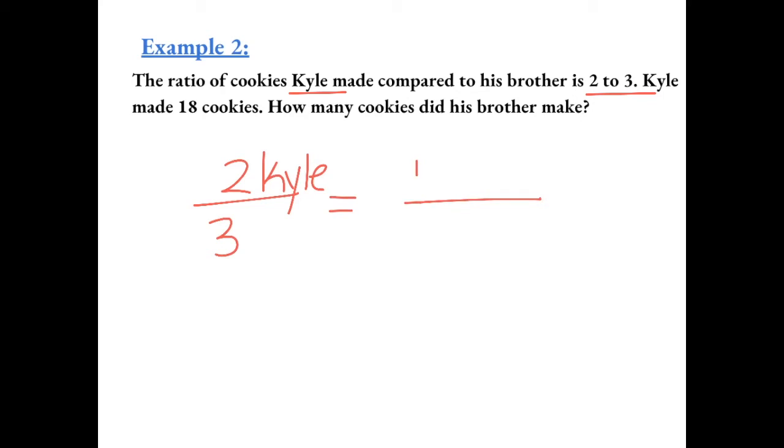So if Kyle made 18 cookies, we can predict how many his brother made. This is 9 times the amount that Kyle made, so the brother should also have made 9 times his amount, which means he made 27 cookies.